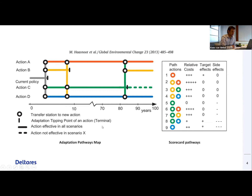This is problematic for policymakers because you make your policy and you don't want to redo it every time a new report comes out. So the objective of dynamic adaptive policy pathways is to develop a policy that is independent of the climate scenario, so you don't have to change it when a new publication comes in. This is typically how adaptive policy pathways look. On the left-hand side you will see a series of actions, and those actions have a certain best before date or terminal — you will recognize the metro map idea this was based on.